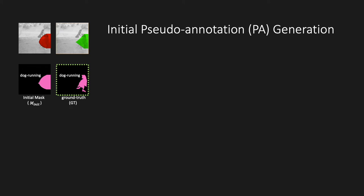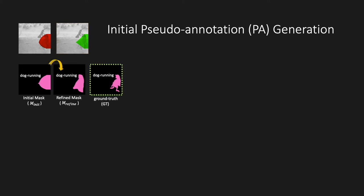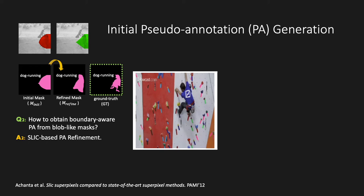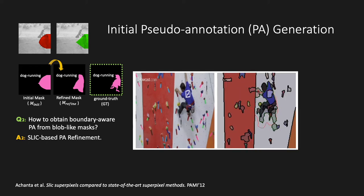Next, we take the union of the actor and action masks and call it the initial mask. The initial mask is mostly a blob which can hardly serve as a qualified pseudo-annotation with clear boundaries. By the way, pseudo-annotation is referred to as PA hereafter. Even though pixel-level ground truth is inaccessible in our setting, we can refine the initial mask to obtain a boundary-aware PA acceptable for training the segmentation model. We propose PA refinement based on SLEEK, a low-level superpixel algorithm. At a high level, this treats the initial mask as a superpixel selector — we impose the initial mask, represented as a sketch in yellow, onto the superpixel map, and it selects the superpixels it has a large overlap with. By this means, the refinement process drags the blob-like initial mask closer to the object boundary.